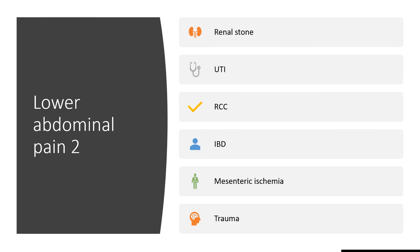Or mesenteric ischemia — in someone with hypertension or atrial fibrillation, middle age or elderly, having pain that is not proportional to whatever you think the diagnosis is at the time. Could be secondary to trauma — maybe somebody punched this person, or a bull, cow, or accident — any form of trauma could give abdominal pain.